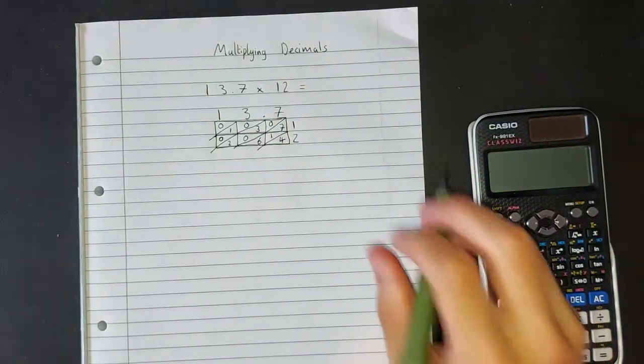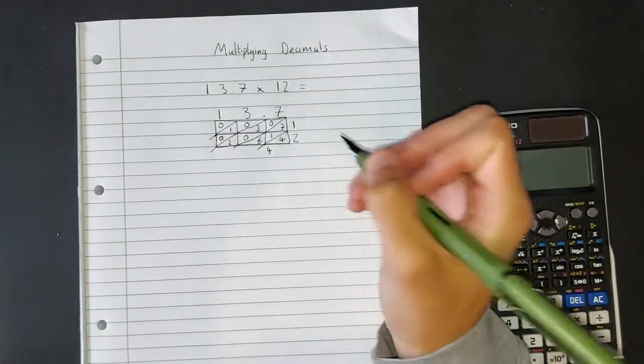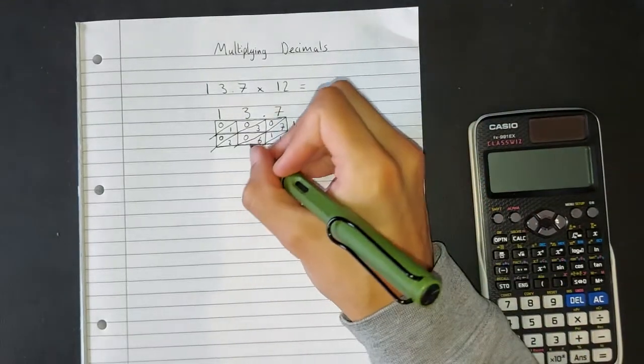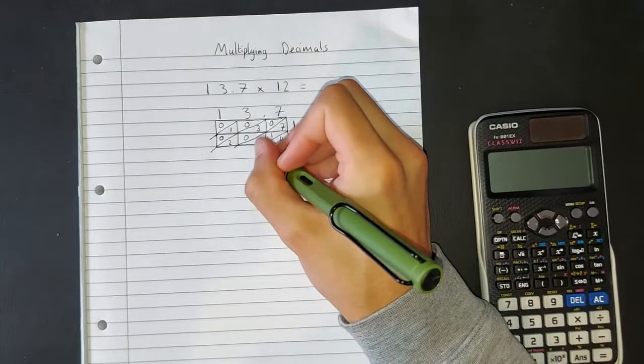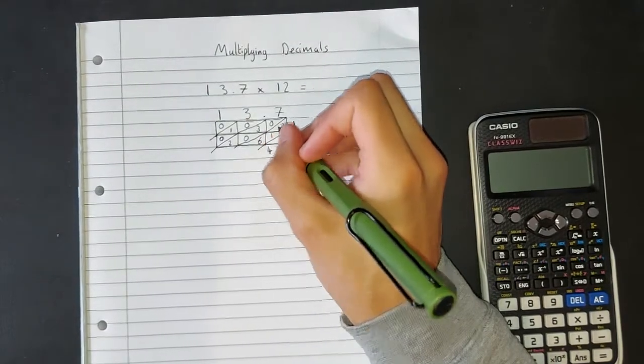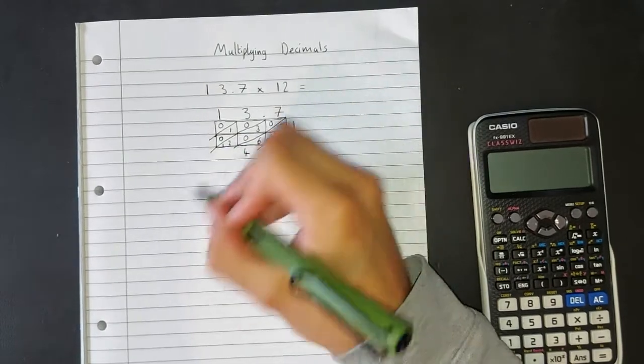Next up, we add everything in our diagonals. So this diagonal here has only got a 4 in it, so 4 add nothing gives us 4. In this next diagonal, we have 7, add 1, add 6. Well, 1 add 6 is 7, 7 add 7 is 14, so I'm going to put a 4 here, and I'm going to carry 1 over into this next diagonal.